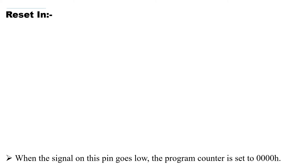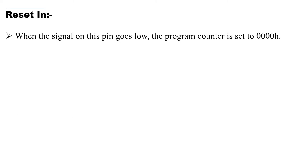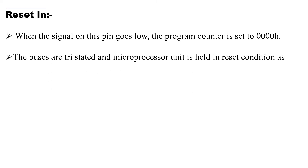RESET IN — you can see there is a bar above RESET IN, which indicates it is an active low signal, as we have already discussed for IO/M bar and INT0 bar. When the signal on this pin goes low, the program counter is set to 0000H. That means this pin will be active only if it is made low. When it is made low, the program counter is set to 0000H. The buses are tri-stated and the microprocessor unit will be held in reset condition as long as RESET IN is applied.